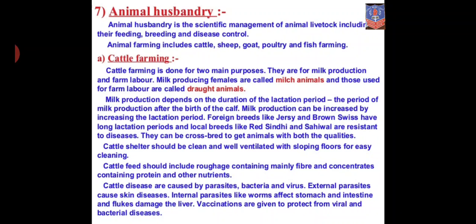Then comes cattle shelter, which is the place where cattle are kept. Cattle shelter should be clean and well ventilated with sloping floors for easy cleaning and drainage of urine. Regarding cattle feed, it should include roughage containing mainly fiber, and concentrates containing proteins and other nutrients.